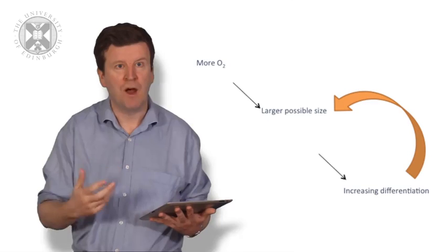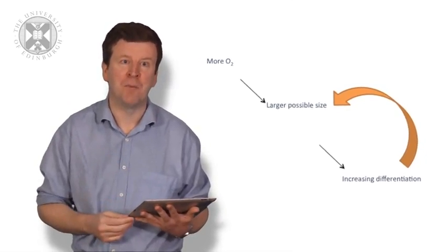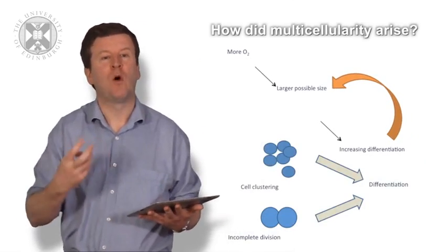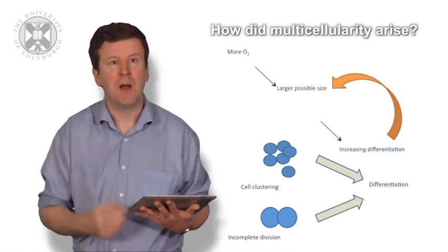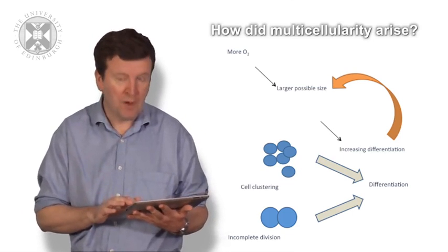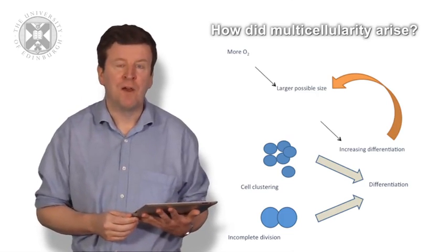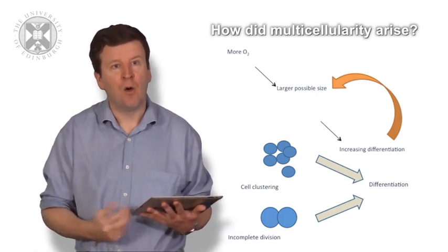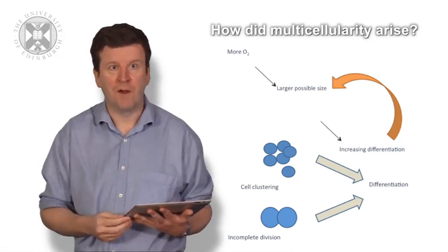And that's the same for other multicellular organisms as well. Without oxygen, the sorts of metabolisms, the sorts of ways in which life can get energy, are much less energy efficient than aerobic respiration. So the rise in oxygen in the Earth's atmosphere might have been one of the triggers that allowed for complex organisms, multicellular organisms, to start to arise on the surface of the Earth.